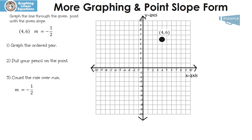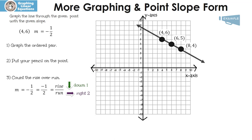My slope is negative one-half. If you remember from the previous video about slope, only one of the numbers gets a negative sign and I like to put it in the top. So our slope is negative one over two — rise over run. I'm going to go down one and run two from the point (4, 6). Down one, over two. And then the last thing we have to do is draw the line.